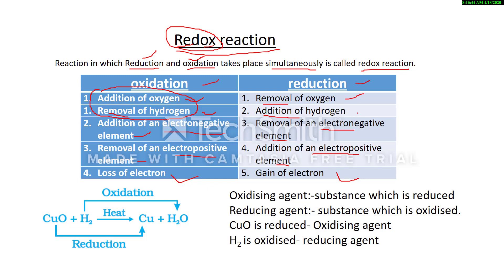Take this example: copper oxide (CuO) reacts with H2 to produce Cu and H2O. Copper oxide is converting into copper — oxygen is removed — so this process is reduction, and we say copper oxide is reduced. Hydrogen is converting to water — oxygen is added — so H2 is oxidized. Remember: the substance oxidized and the substance reduced are always identified from the reactant side, not the product side.